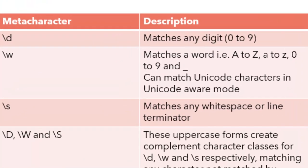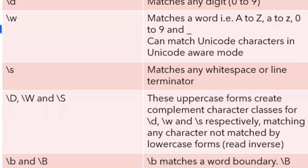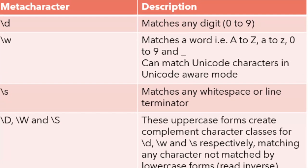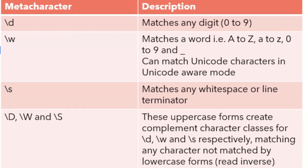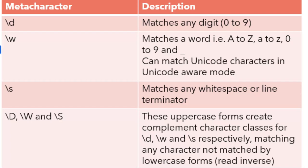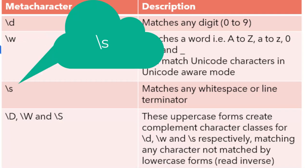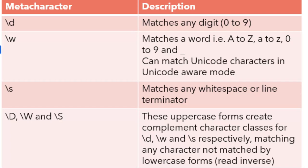Backslash w matches all English alphabets case-insensitively, plus digits and underscore, and can extend to Unicode characters in Unicode-aware mode. Backslash s matches any space or line terminator like newline. All three — backslash d, backslash w, and backslash s — have uppercase counterparts with a totally inverted meaning; that is, they match anything but what the lowercase version matches. For example, backslash capital D would match any character except zero to nine, useful when you want to express 'I expect anything but a word' in the input string.